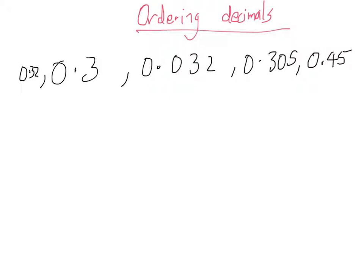What I like to do when I'm asked to order decimals is put them in a vertical list first. So I've got 0.32, 0.3, 0.032.